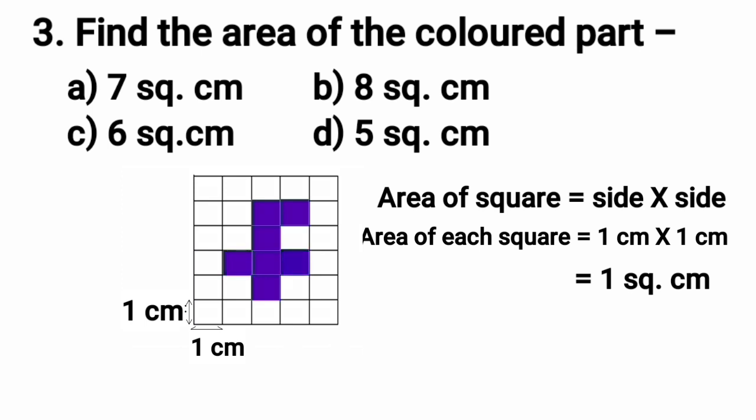So, in total we have 7 colored squares here. That's why their area is 7 square centimeter. We will find the option with 7 square centimeter as the answer, and we can see at option A we have 7 square centimeter. So, we will put a tick mark at option A.